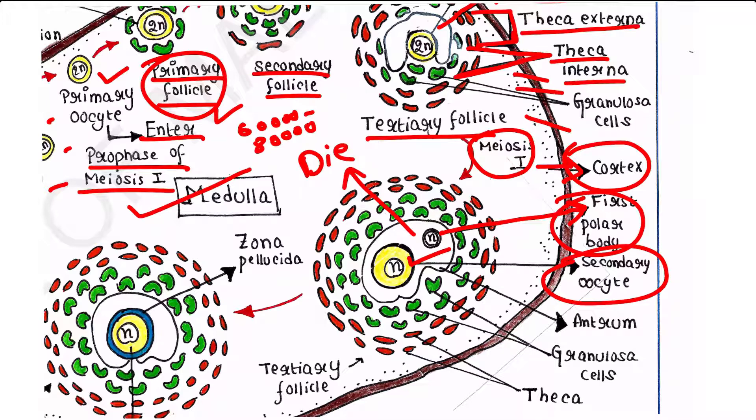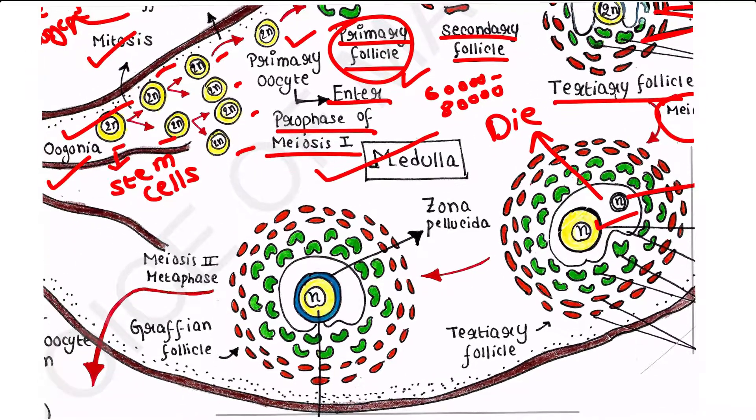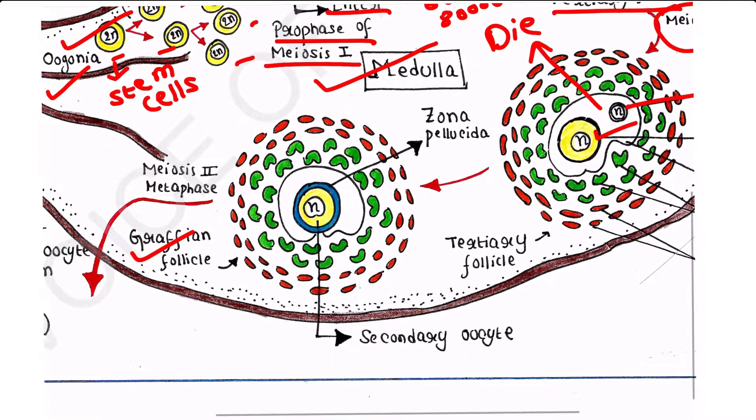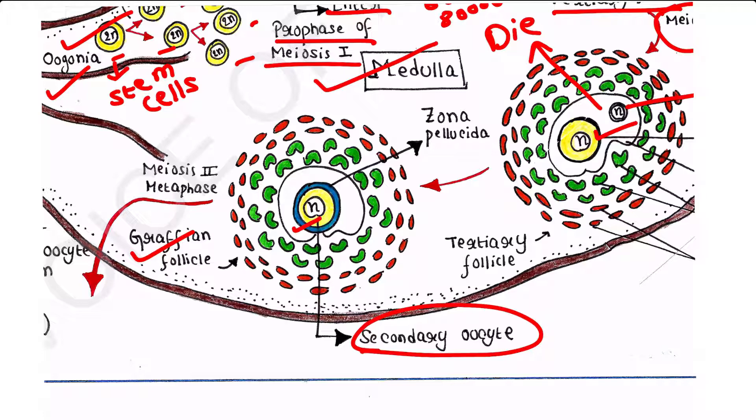The tertiary follicle further changes into a Graafian follicle. The secondary oocyte forms a new glycoprotein layer called zona pellucida. It is a layer of glycoprotein. Zona pellucida surrounds the secondary oocyte.